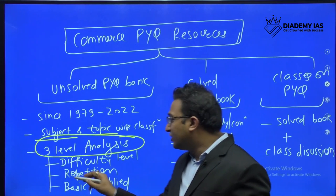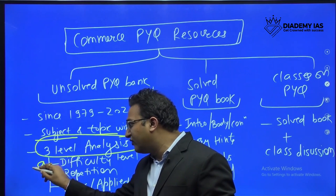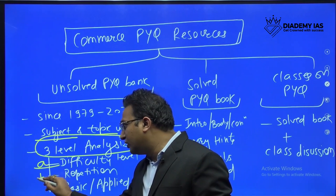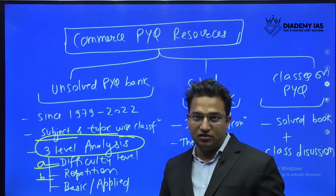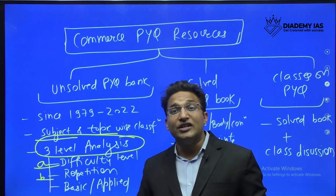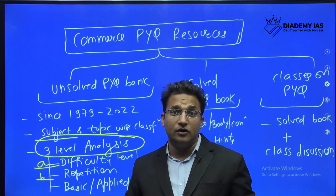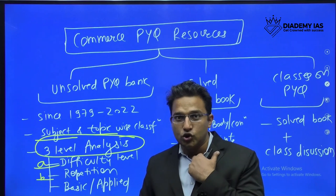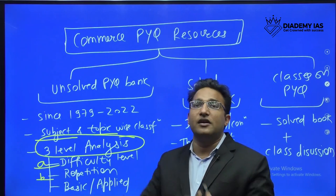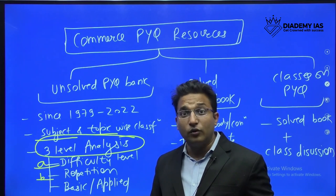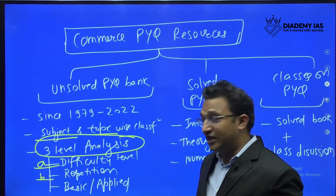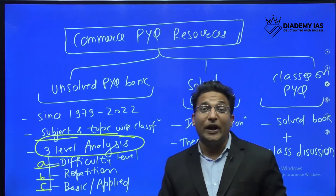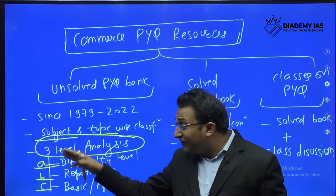This is something unique and very helpful — we do a three-level analysis. First, we tell you the level of difficulty: easy, moderate, or difficult. Second, we tell you if there is any repetition. For example, virtual structure in paper number two, organization theory, has been repeated at least five or six times. So we tell you this topic is repeated five times so you can focus more on it.